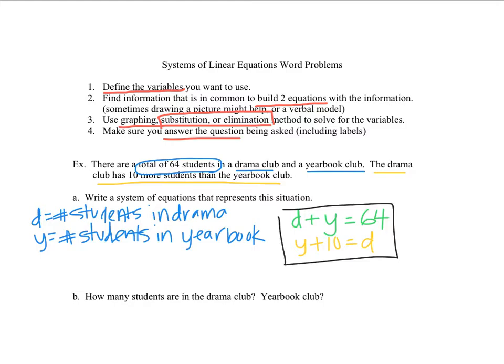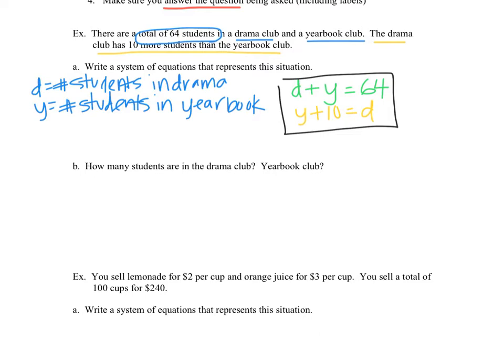Now we're going to go down to part B, and we're going to solve. So what you want to do is you want to look at your system, and you want to say, which technique makes the most sense for me to solve? And I have a variable by itself, so that hints at me to use the substitution technique. So I'm going to rewrite the green equation, the first equation. But instead of D, I'm going to put Y plus 10. That was our substitution technique. So it's Y plus 10 plus Y equals 64, because Y plus 10 is representing the D.